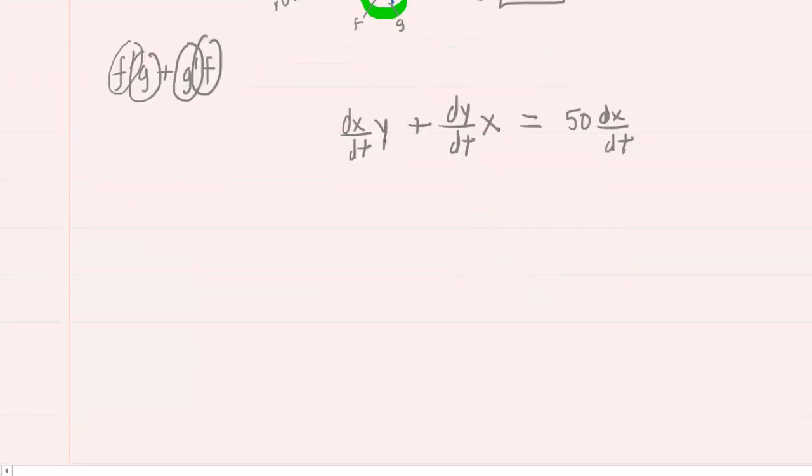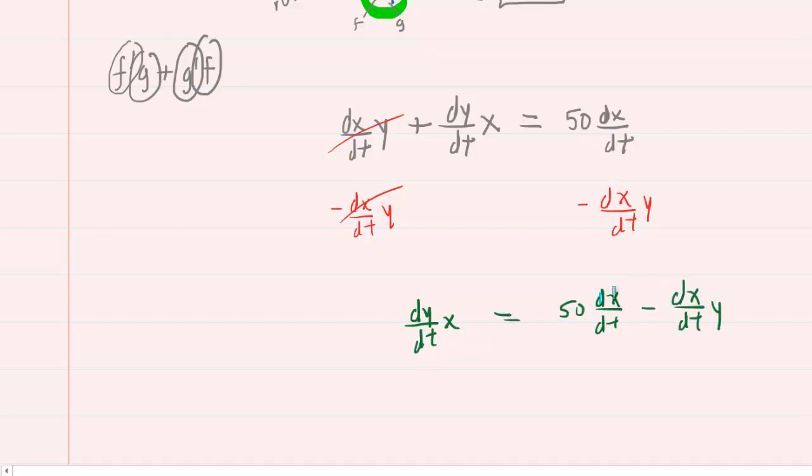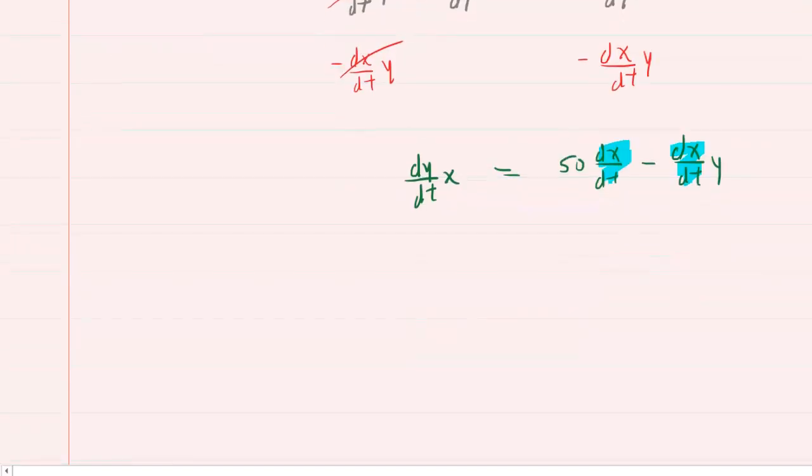Again, the question wants dx/dt, so we will find it useful to solve the equation for dx/dt. So what we'll do is subtract dx/dt y from both sides of this equation. It will cancel out on the right-hand side. So now we have dy/dt multiplied by x is equal to 50 dx/dt minus dx/dt times y. We have this greatest common factor of dx/dt right here, so we're going to factor that out. So we'll factor it out as dx/dt, and that will leave us with 50 minus y in the parentheses.